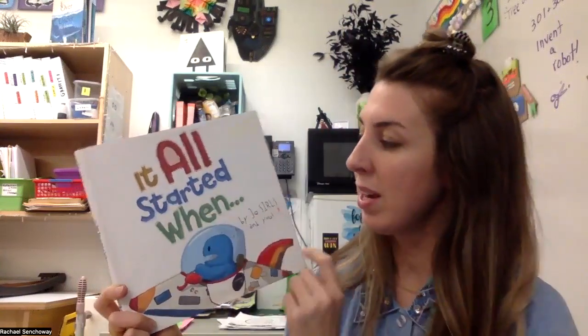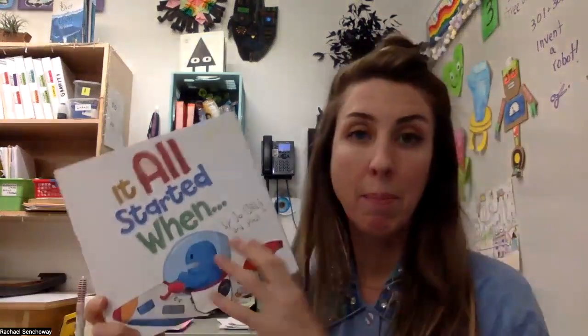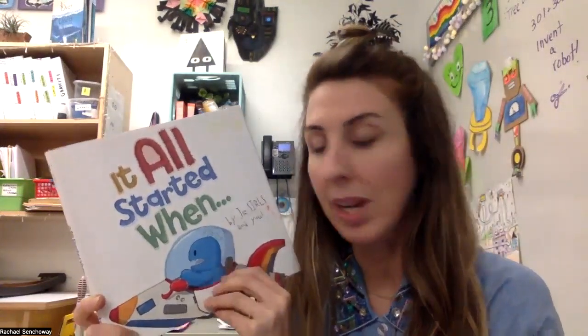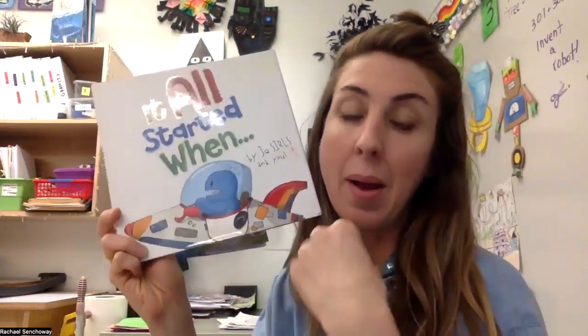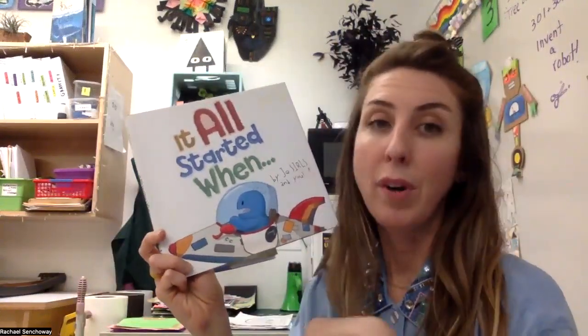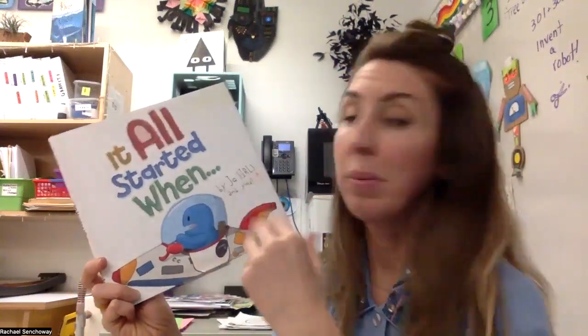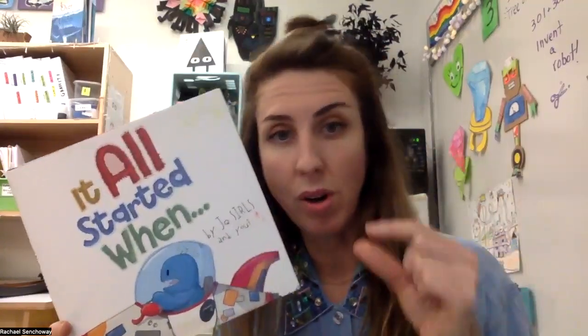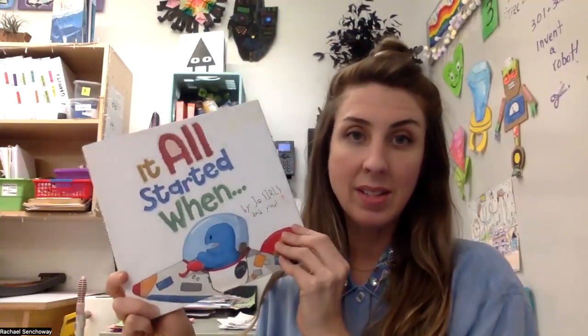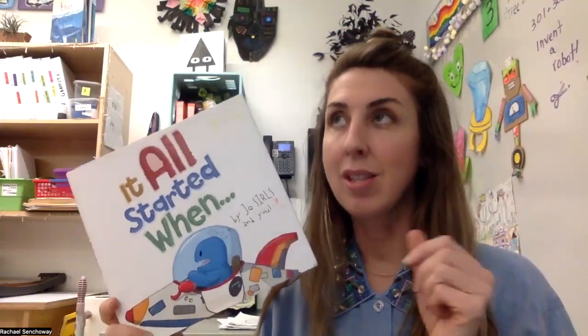It all started when — you have to write a short story and create a picture based on your story. This little character here is called an imagi, short for imagination, and he is from a place called Fantoria. This is a very short story that you're going to write a little story about and draw a picture. If it wins, you win some really cool prizes. They're going to pick six winners.